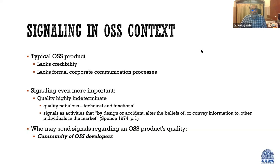Given that context, the question was: how does an open source product send signals to the community regarding the quality of their product? And what kind of signaling may work? Traditional instruments like advertising may have a breakdown due to lack of established brand names, marketing activities, and lack of any prior reputation for some of these developers.